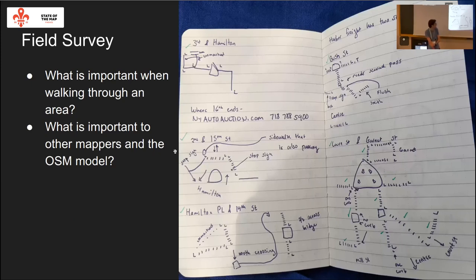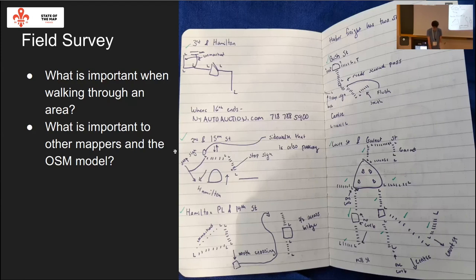Having a notebook is great, especially when you're inspired to map an insane intersection — you almost always have one handy. With repeated field visits, you start to think about what you forgot to capture last time, so you can flip back to old notes. Another great technique is taking geotagged photos. Mapillary has a mobile app for uploading photos and that's helped me a lot. Through the repeated process you also learn what's important to other mappers and what's important to map for the models, beyond what you personally find interesting.